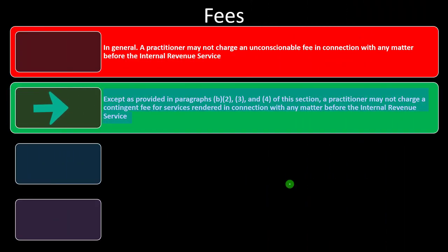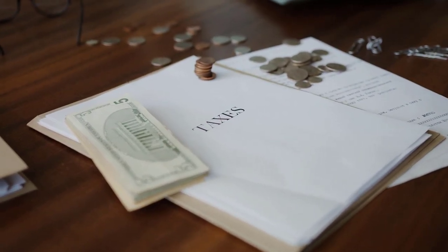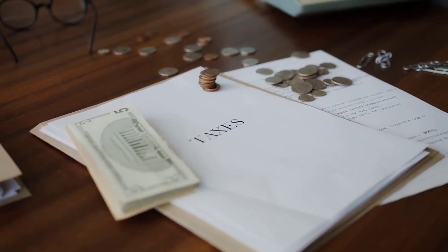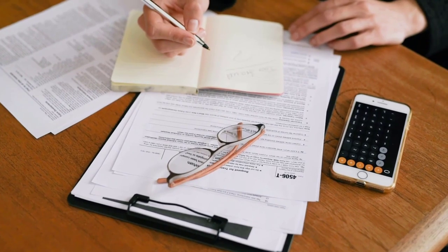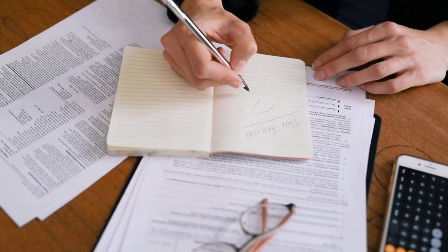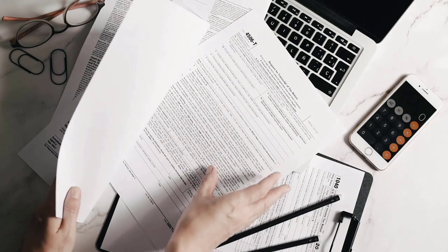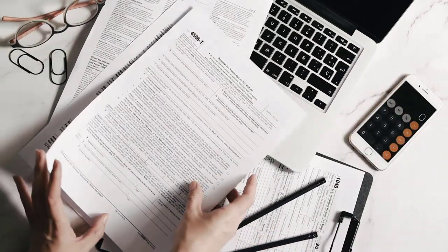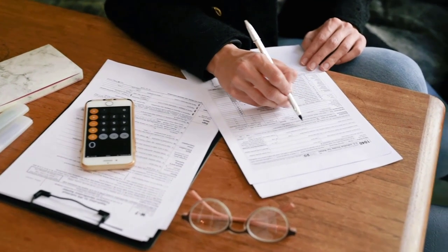Except as provided in paragraph B, 2, 3, and 4 of this section, a practitioner may not charge a contingent fee for services rendered in connection with any matter before the Internal Revenue Service. A contingent fee is one that's contingent on the outcome — and you can see how that causes a problem for a tax preparer. For example, if you're preparing taxes and charging a fee based on the refund you get the client, you have a clear incentive to maximize that refund. That's a big problem, because what we want is for the practitioner to file an accurate return, optimizing the refund as much as possible within the context of the law.